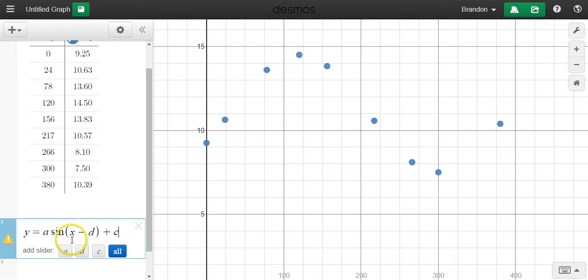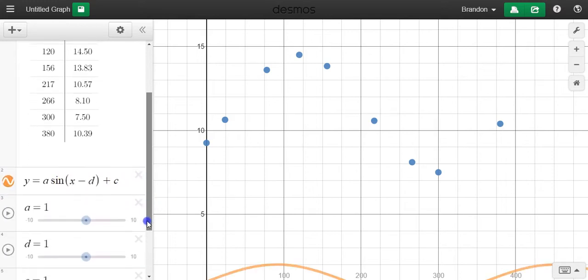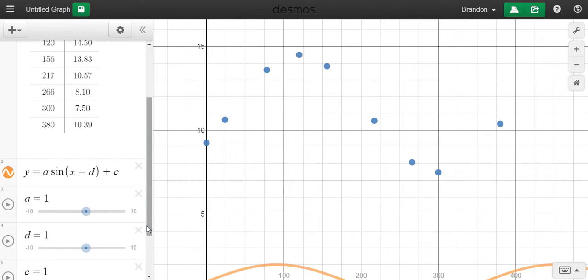There's one more, which we might write B, we would write in front of the X or in front of the X minus D here. That would be to change the period. And we're not going to do that in this example because we don't need to.